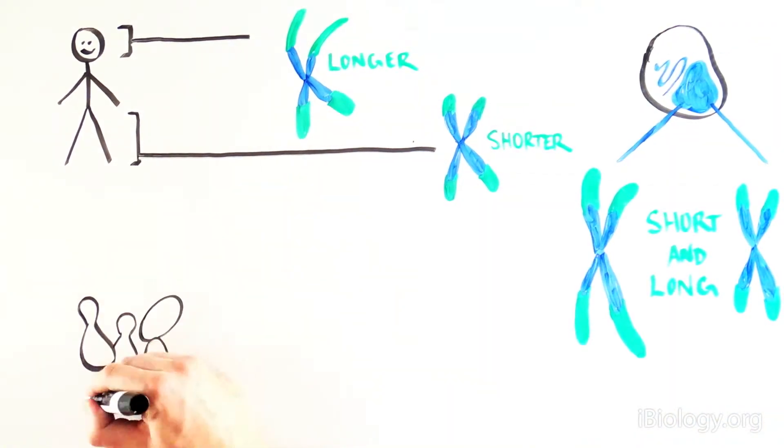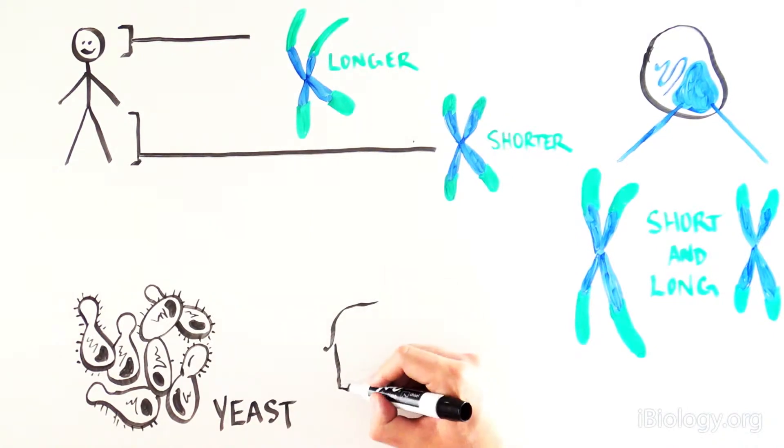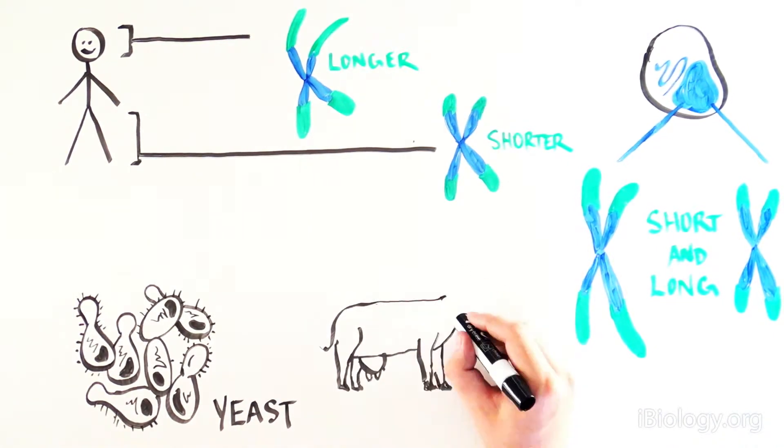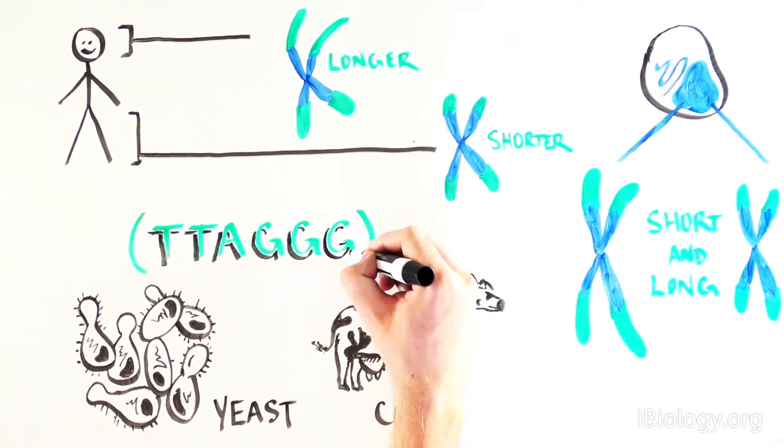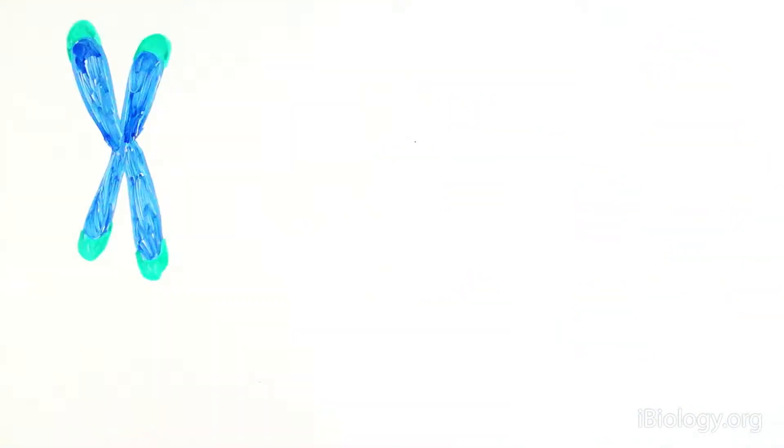The fact that all of these organisms had the same conserved sequence at the ends of chromosomes suggested that the telomere was very important. But if that's the case, then there must be a mechanism to extend the telomere and prevent it from shortening and being deleted after every cell division.